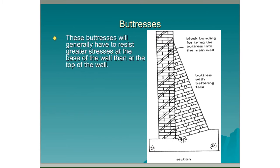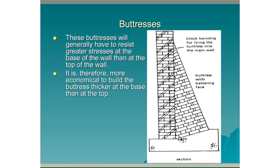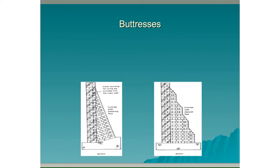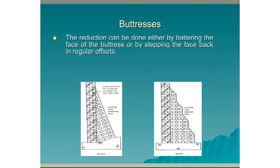These buttresses will generally have to resist greater stresses at the base of the wall than at the top of the wall. It is therefore more economical to build a buttress thicker at the base than at the top. The reduction can be done either by battering the face of the buttress or by stepping the face back in regular offsets.